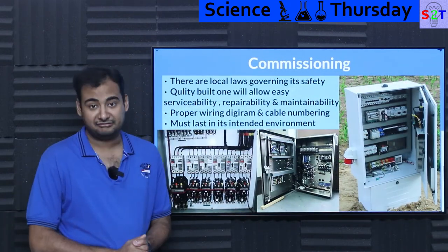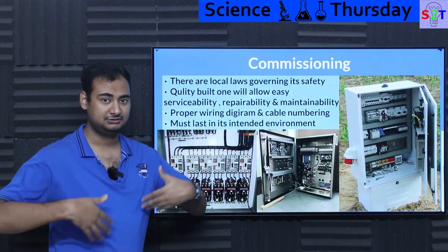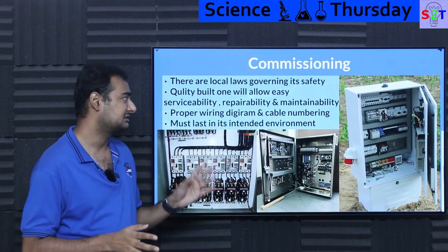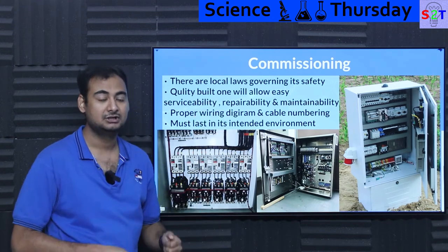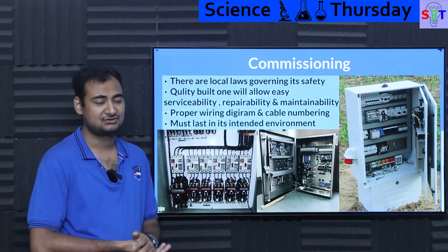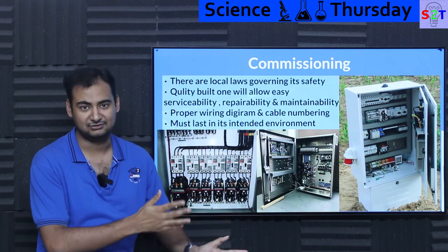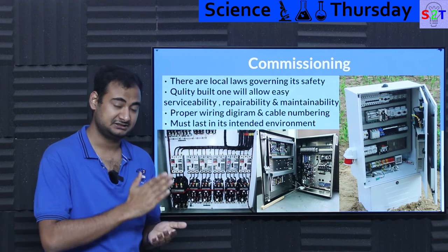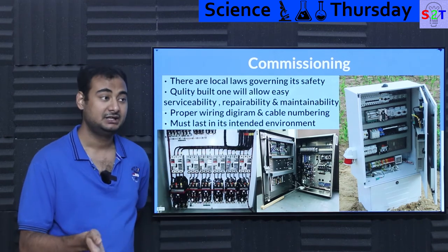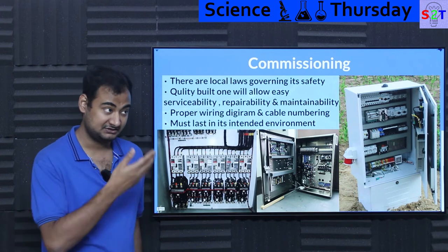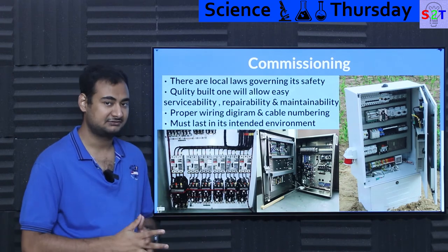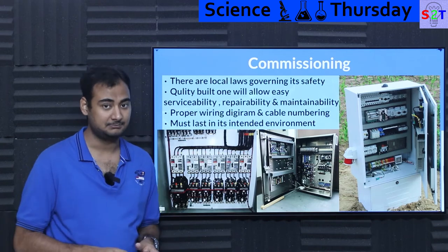Finally we come to commissioning — how do you deliver it to the customer. There are local laws, specifically when dealing with high voltage; it is not something you can just build and hand over. It has to go through commissioning. Depending on your local situation there will be codex requirements: Is there proper grounding? What is the ingress protection level? If you are in an environment with oil vapors, what is the arc probability? Local laws apply.